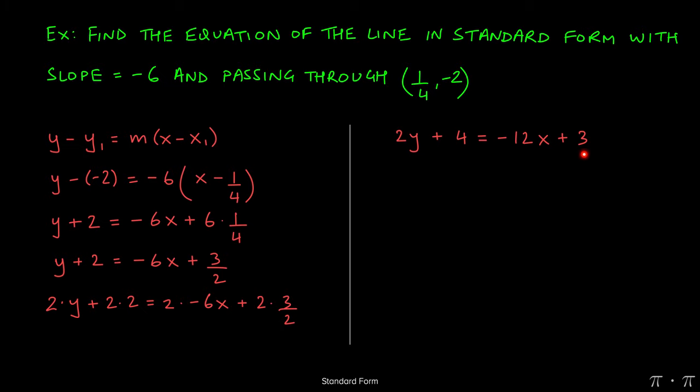So now we have no longer any fractions. We want to get all the x's and y's on one side. So again, since we want the coefficient of x to be positive, because it is negative, I'm better off moving the x to the left-hand side instead of moving the y over with it. And before I do that, let's make space for it by moving the 4 over to the right-hand side.